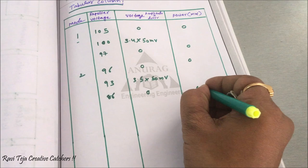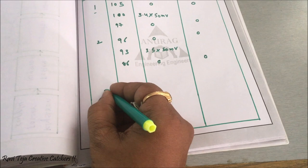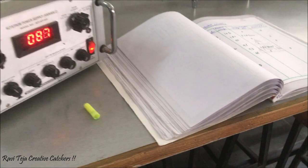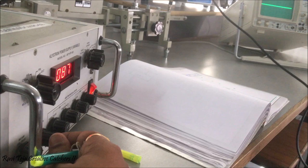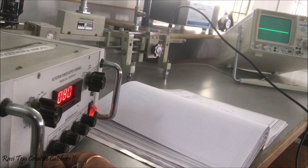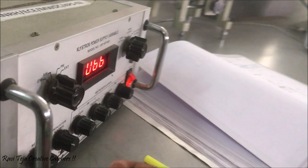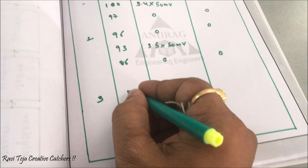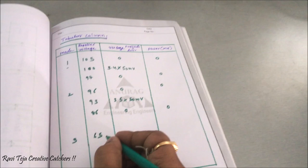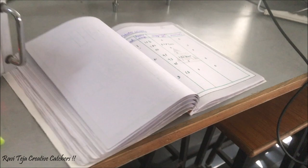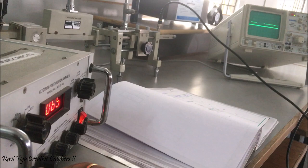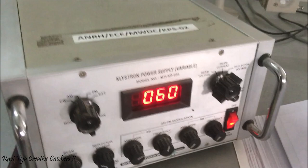Now for mode three, we move the reflector voltage again. At around 65 volts, we get the starting point of the third signal with amplitude 0. Moving the reflector voltage further, at 60 volts we get the third signal.